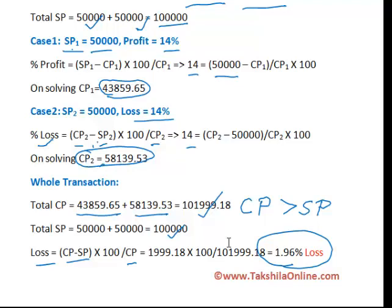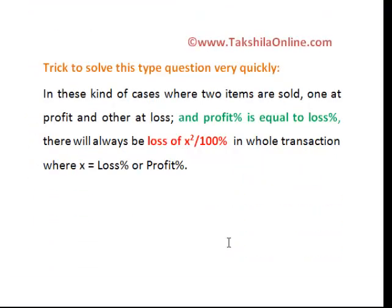In a real exam you don't have that much luxury of time. So now we will see how we can solve this question in just a fraction of a second. This is the trick: if two items are sold — one at profit and another at loss — and the profit percentage is equal to the loss percentage, then there will always be a loss of x² divided by 100 percent in the whole transaction.